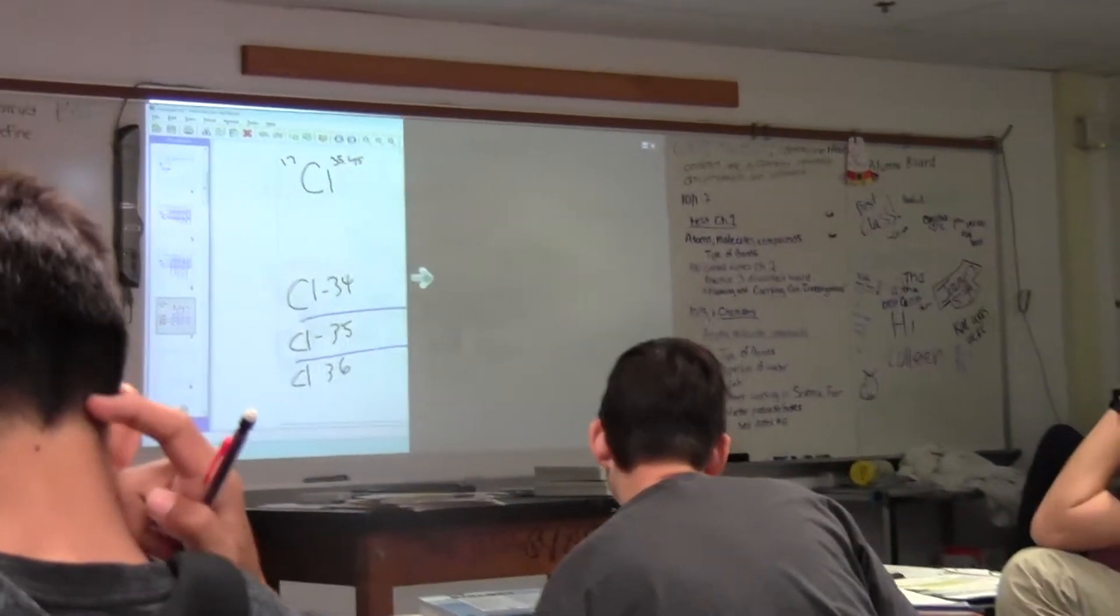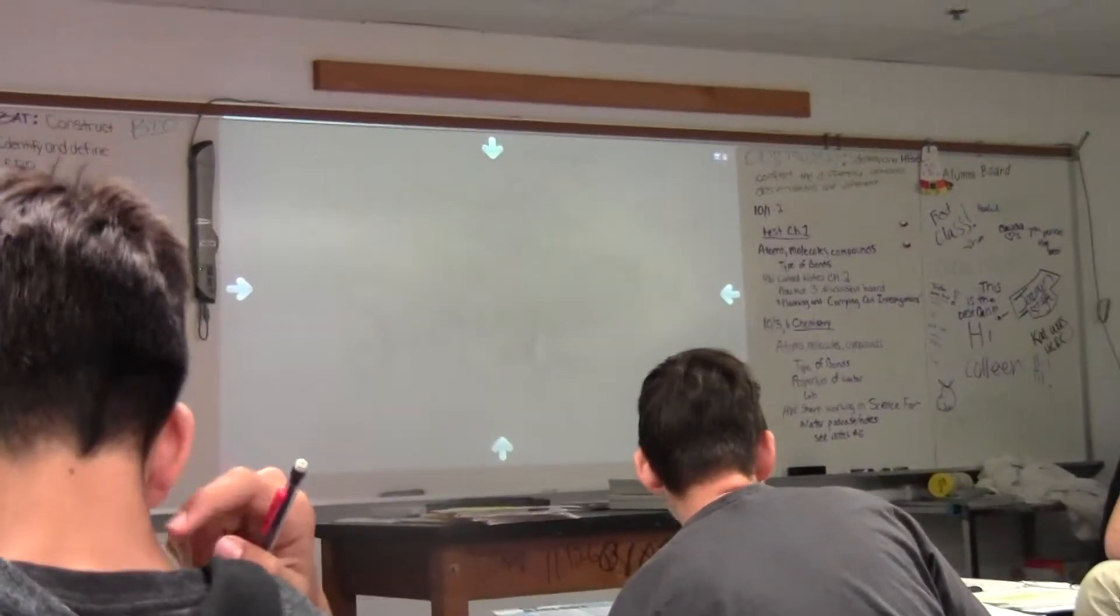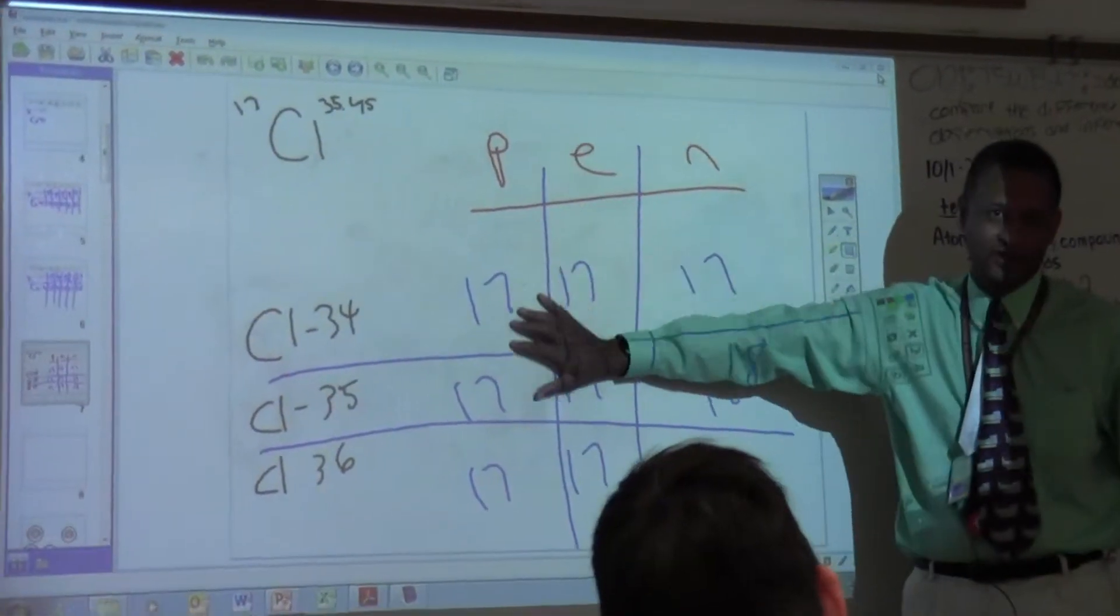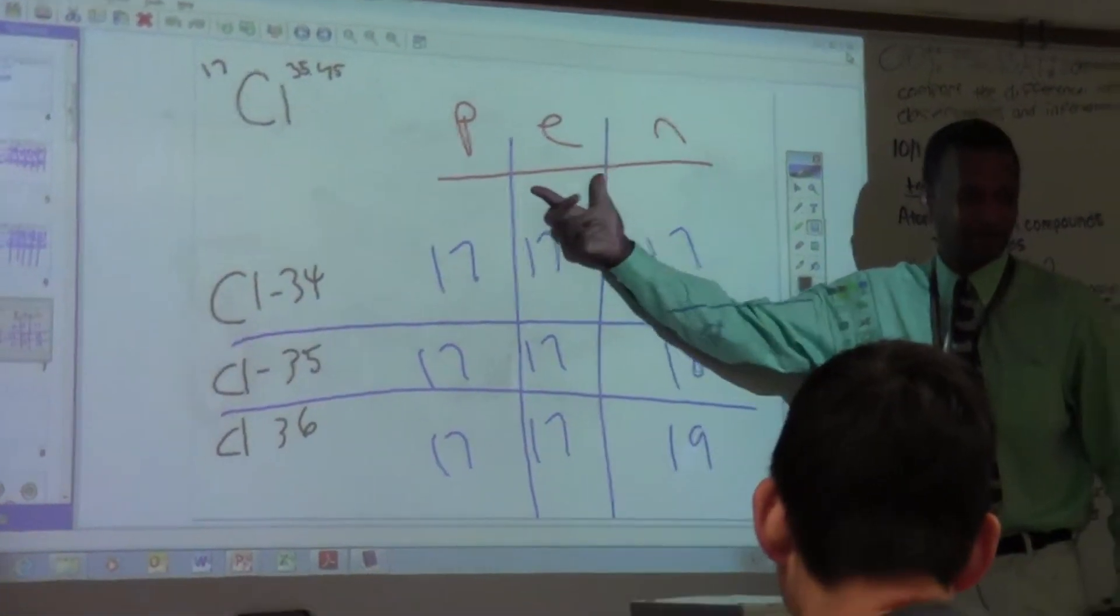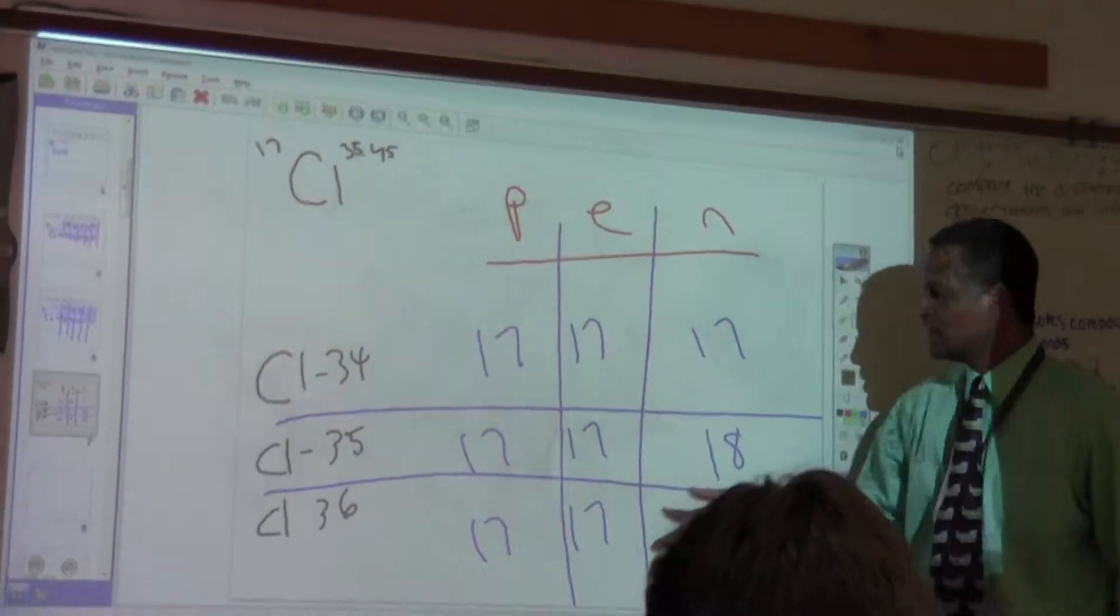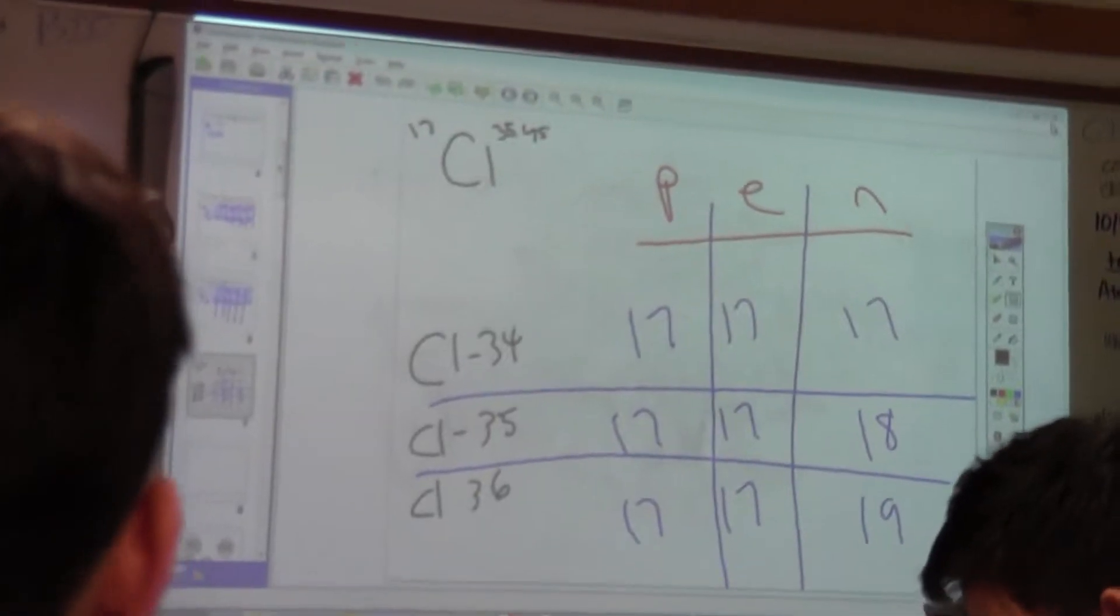Right? You got those three? Check and see your answers. Did you get the same for all these? Should you have gotten the same for these first three? I mean, for the P and the E, the proton and electron? Alright, this is where it differs.